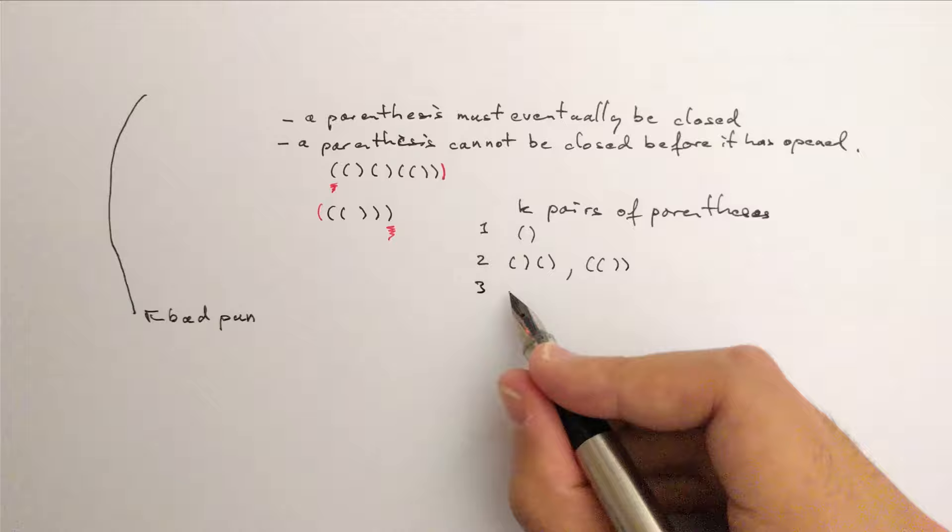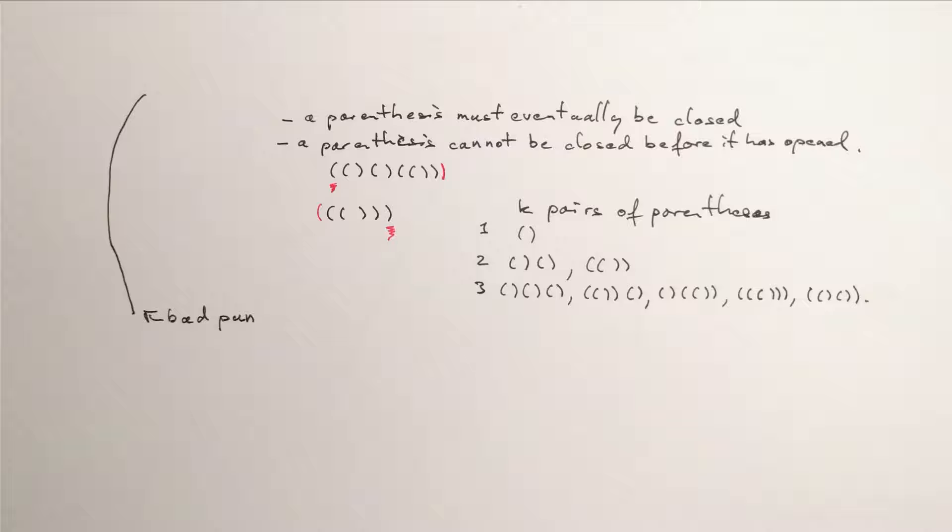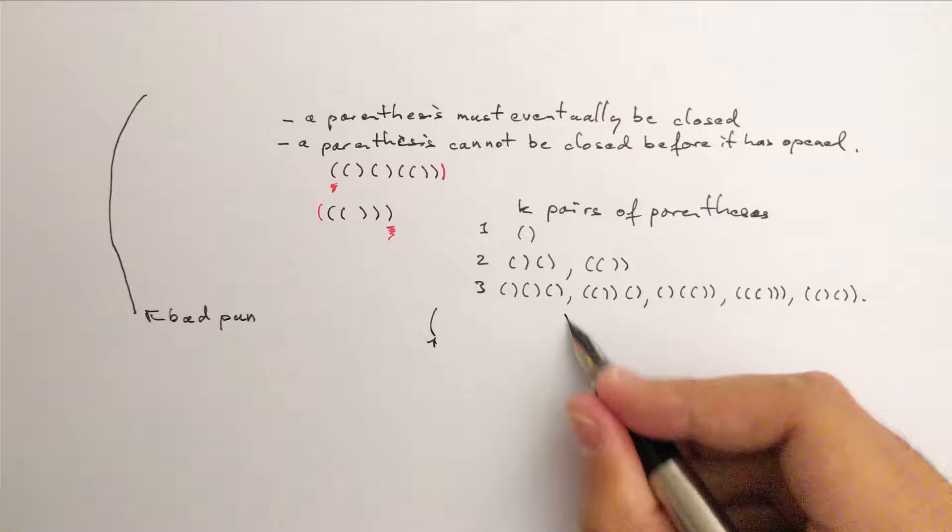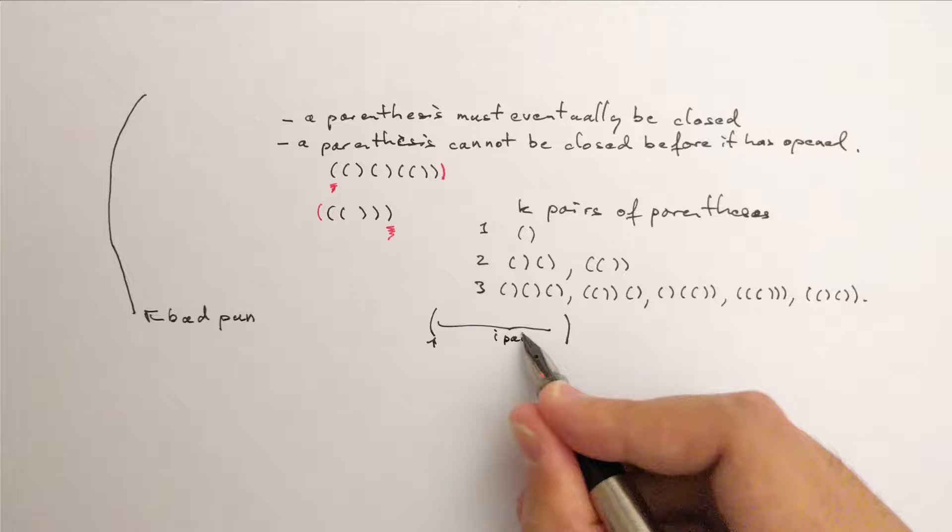Well, there's a bit of a recurring theme to this video, of course. But why is that? The first parenthesis is an opening parenthesis by the second rule. And it has a matching closing parenthesis by the first rule. Now let's say inside of those, you have i pairs of parentheses. The rest of them follows.